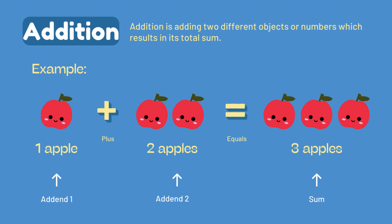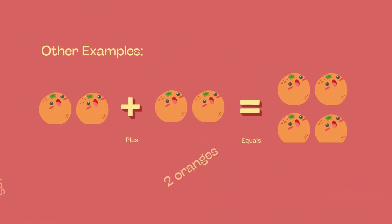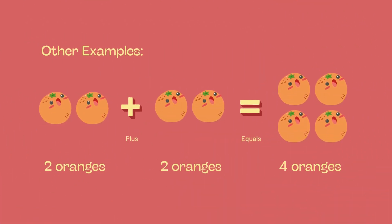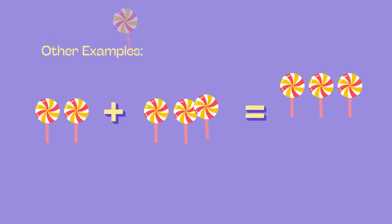Here's another example for you: two oranges plus two oranges equals four oranges.